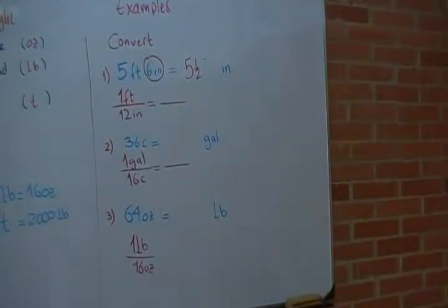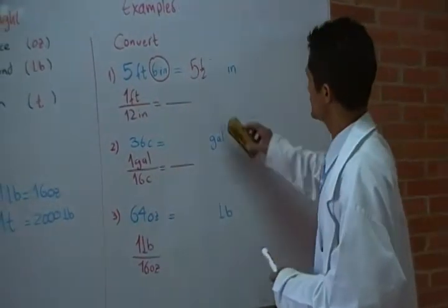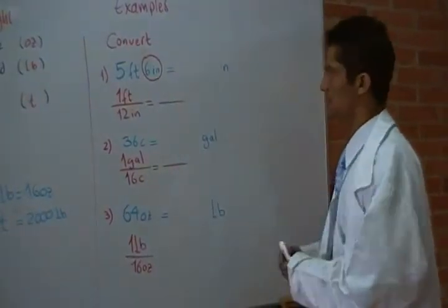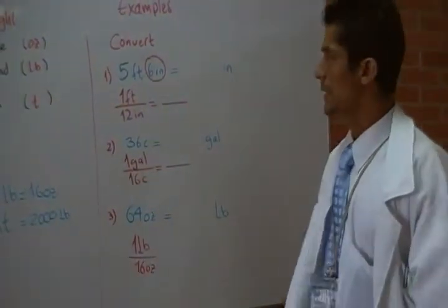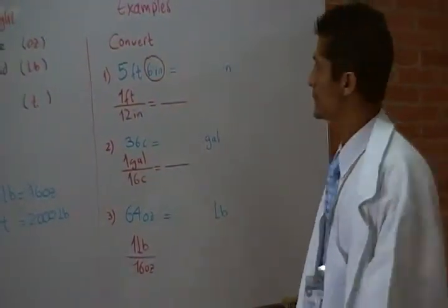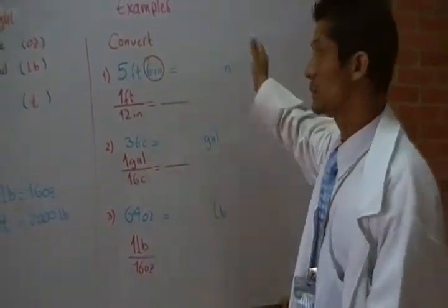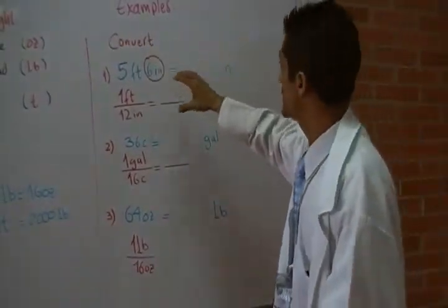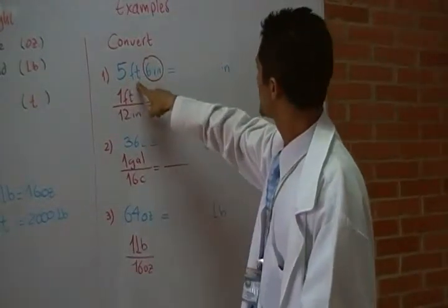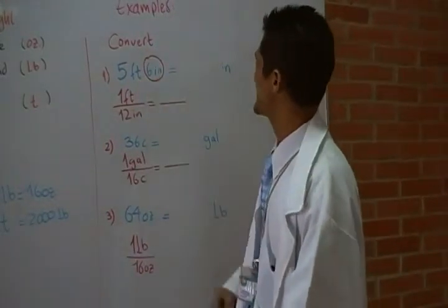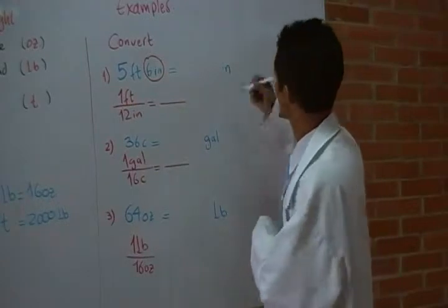The same as in the metric system, we can use conversion factors. Very usually, you know, conversion factors in the metric system, because we just move the decimal point to the right or to the left. In this case, I'm going to convert five feet and six inches into inches.